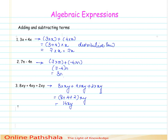In like terms, the sum of two or more like terms is a like term whose numerical coefficient is equal to the sum of the numerical coefficients of all the terms. Similarly, the difference between two like terms is a like term with the numerical coefficient equal to the difference between the numerical coefficients of the terms.